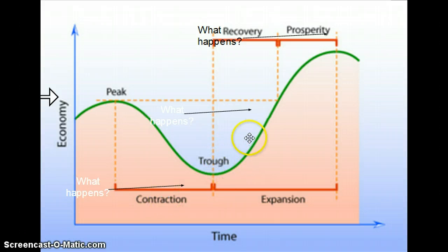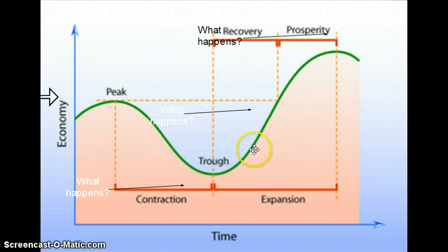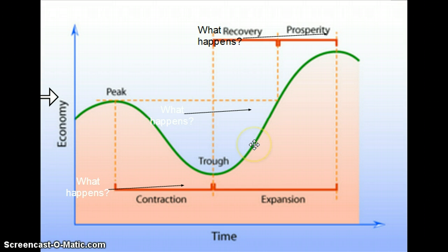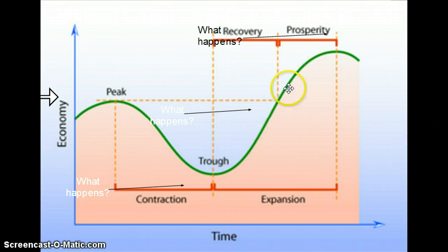During the expansion period, economic indicators are basically the exact opposite of what happens during contraction. Unemployment is going down, more people are being hired, people feel very confident about the economy, retail sales are up, and consumer confidence is up. Inflation is at a much healthier rate — maybe three or four percent, especially as you get toward the peak.